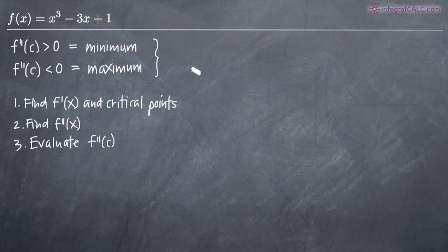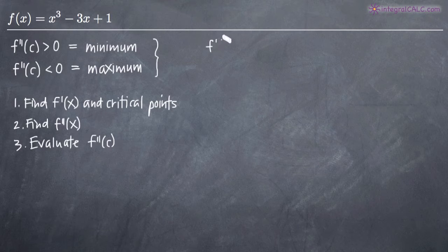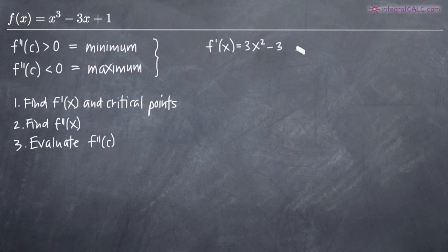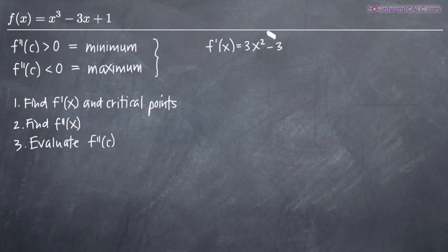Proceeding with step one, we find the first derivative. This function is really basic — we're just using it to illustrate the second derivative test. Using the power rule to evaluate each term, we get f'(x) equals 3x squared minus 3. The derivative of 1 is zero because it's a constant.